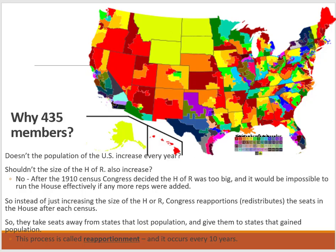Instead of increasing the size of the House, Congress decided to reapportion — to redistribute and reorganize the seats after each census. This allows for adjustment when states lose population, which affects how big a voice they have in the House. States that gain population will be adding more seats. That process is called reapportionment and it occurs every 10 years after the census.